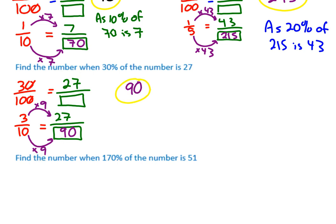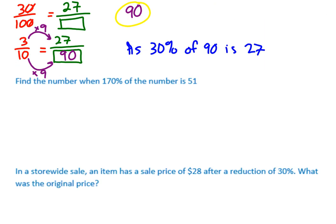I'll just quickly write the reference as 30% of 90 is 27. So the answer is 90 in yellow. I've got two more to do just quickly.